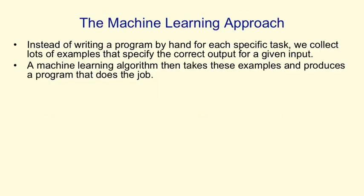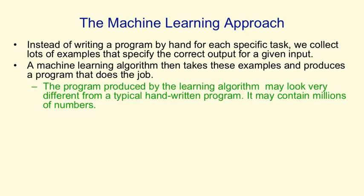The machine learning approach is to say: instead of writing each program by hand for each specific task, for a particular task we'll collect a lot of examples that specify the correct output for a given input. A machine learning algorithm then takes these examples and produces a program that does the job. The program produced by the learning algorithm may look very different from a typical hand-written program.